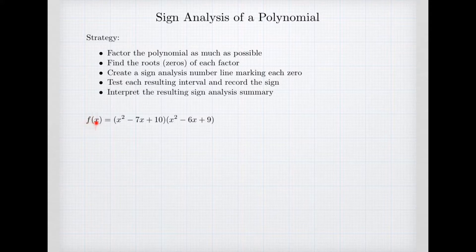We have a polynomial here: it's the quantity x squared minus 7x plus 10 times x squared minus 6x plus 9. I've started this way so that we have a partially factored polynomial to work with, and we'll just need to finish factoring a few steps.